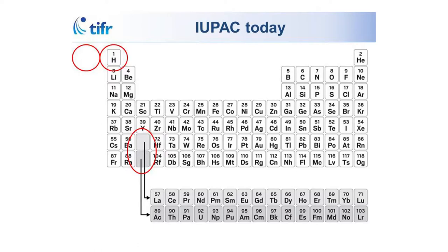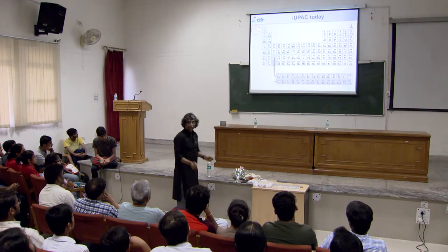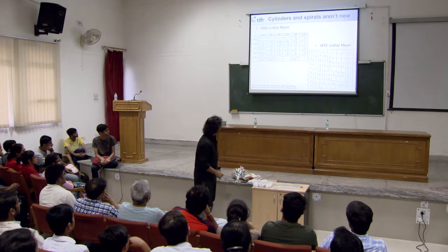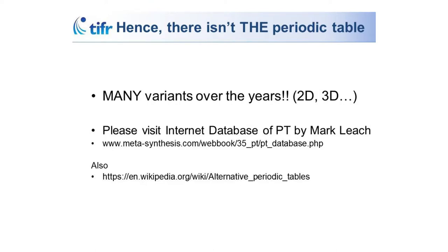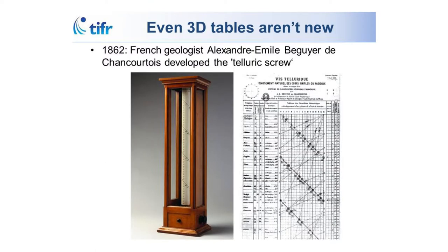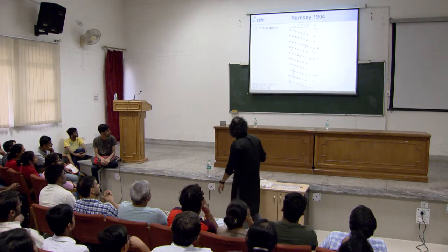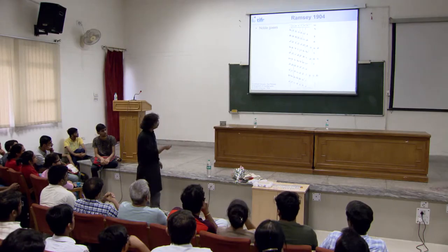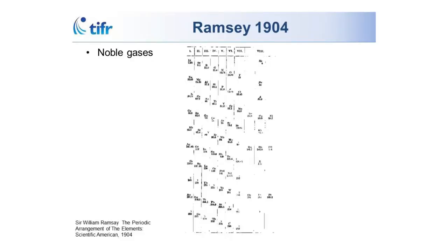Another problem: going from argon to potassium on the other side, you can imagine bending the periodic table around and joining it up into a spiral. Cylinders and spirals are not new — Meyer had a spiral version after ten years. This thing from 1862 is effectively a spiral and also a 3D table — you could consider it the first 3D table. Ramsay had something like this in 1904 — I like it, it has character. It goes hydrogen, helium, this way, then that way, then this way — it's not a boring periodic table.